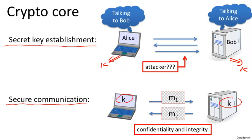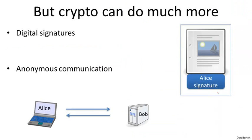But cryptography does much more than just these two things. The first example I want to give you is what's called a digital signature. A digital signature is basically the analog of a signature in the physical world. When you sign a document, you write your signature on it, and your signature is always the same — you always write the same signature on all documents that you want to sign.